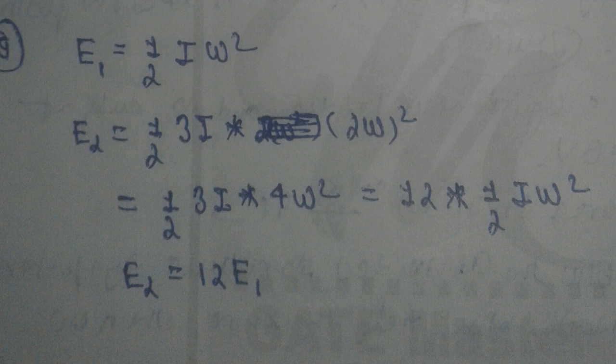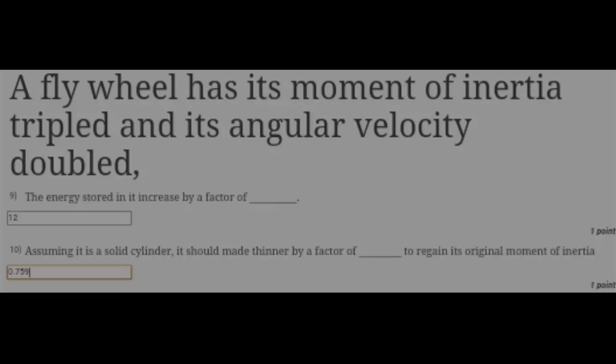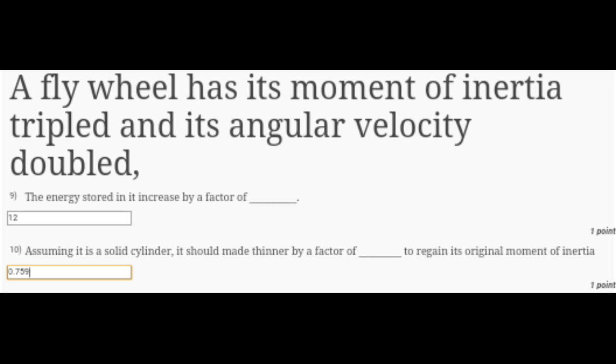Now taking the tenth question: assuming it is a solid cylinder, it should be made thinner by a factor of blank to regain its original moment of inertia. For the solution of this question, we know for a solid cylinder I = ½mr².